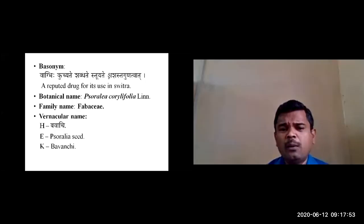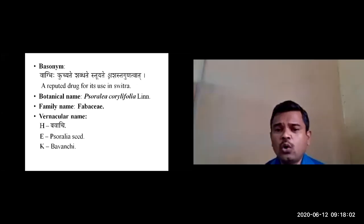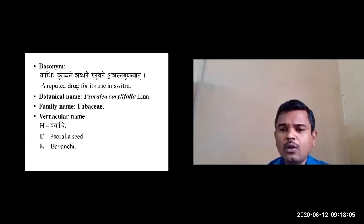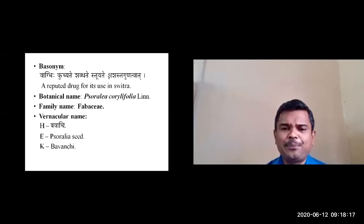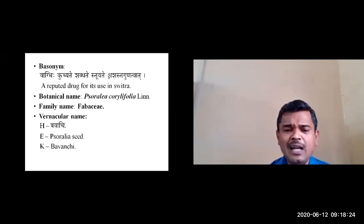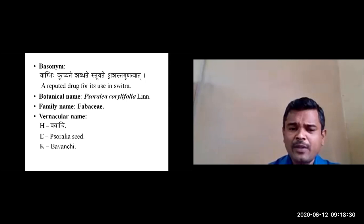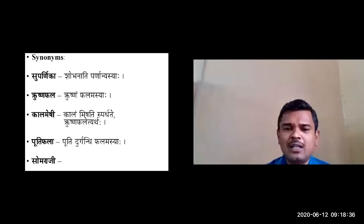The botanical source of Bakuchi is Psoralea corylifolia, belonging to the family Fabaceae. Vernacular names include Bhavachi in Kannada, and it is also called Sorolia Seed. Acharya Charaka has not mentioned it in any of the Mahakashaya, and even Shushruta has not mentioned it in any of the Ganas.